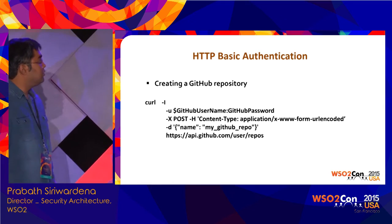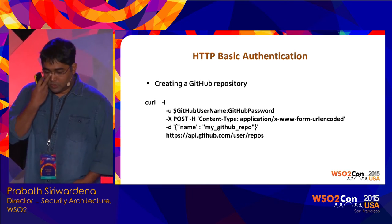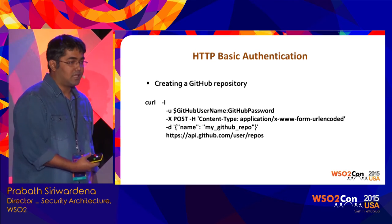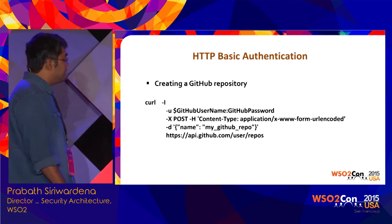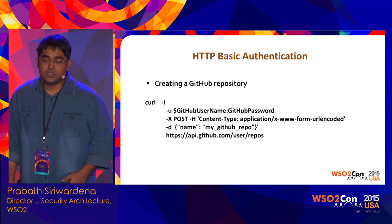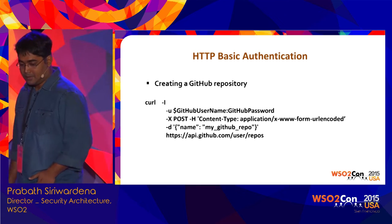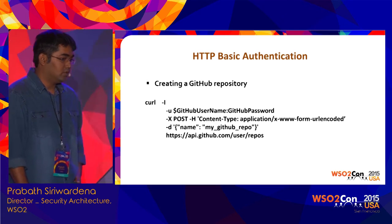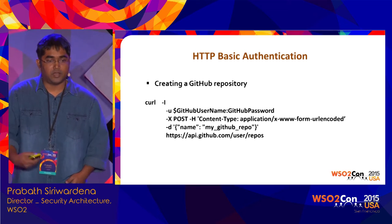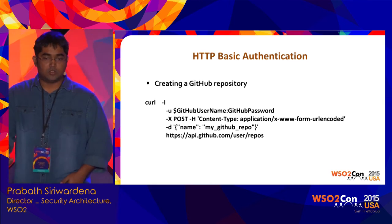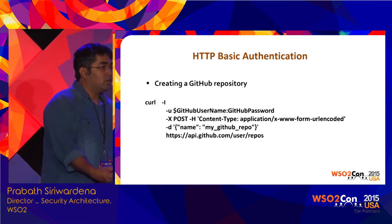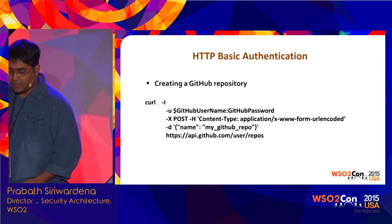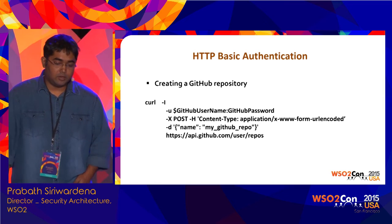Let's talk about direct authentication — this means I am the owner of the API and I'm going to access it as myself. The most common one used some time back when securing APIs is HTTP Basic Auth. Even today, if you go to GitHub and try to create a repository through its API, you are the owner of that repository. You just pass your username and password in the HTTP authorization header and you can create your own API.